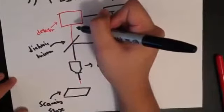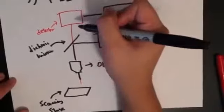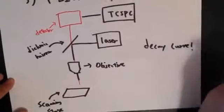And by recording arrival times of many photons, a decay curve can be derived based on the fluorescence lifetime measurement.